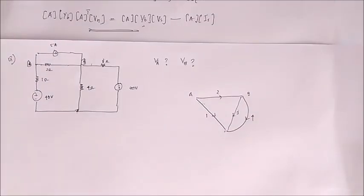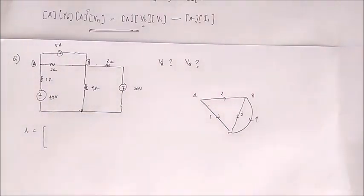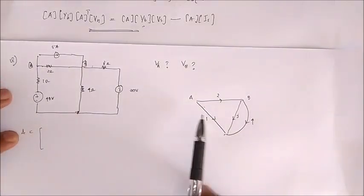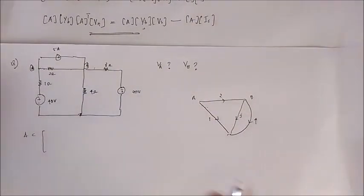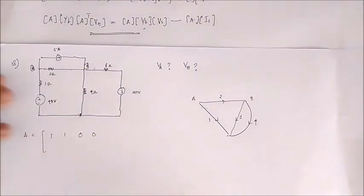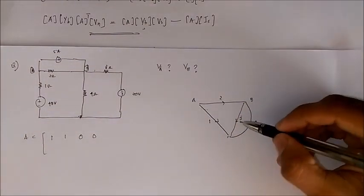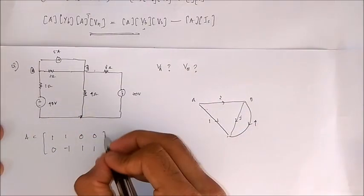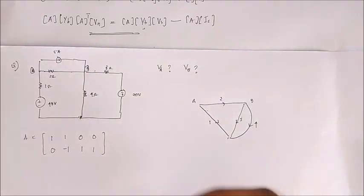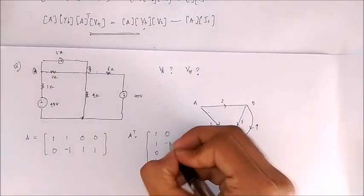Now let's write the incidence matrix. For node A: branches one and two are leaving, so both get positive one; branches three and four are not incident, so they get zero. For node B: branch two is entering and branch four is leaving, so branch two gets minus one and branch four gets plus one, with others zero. So this is our incidence matrix A, and we also write the transpose A-transpose.